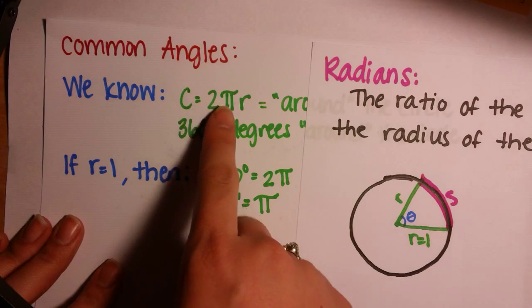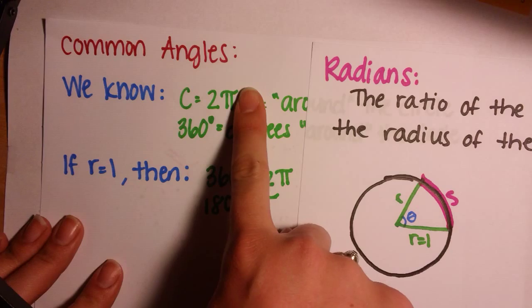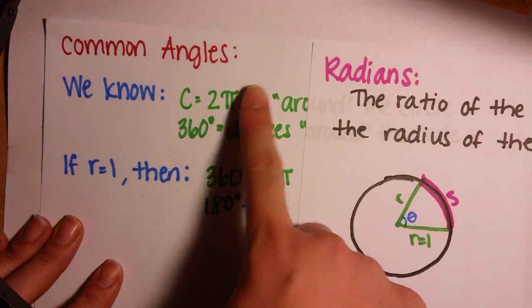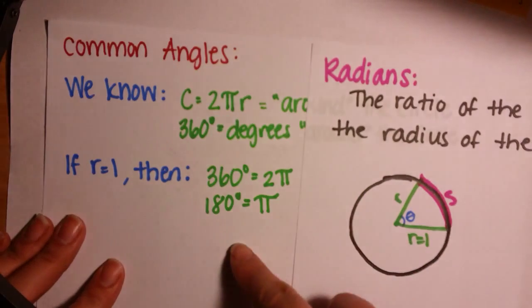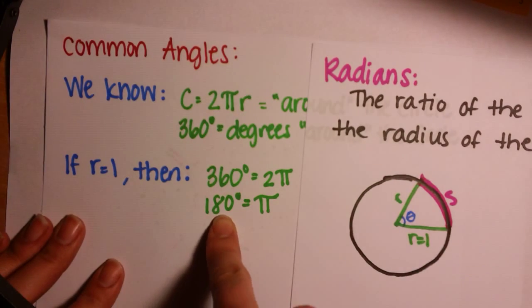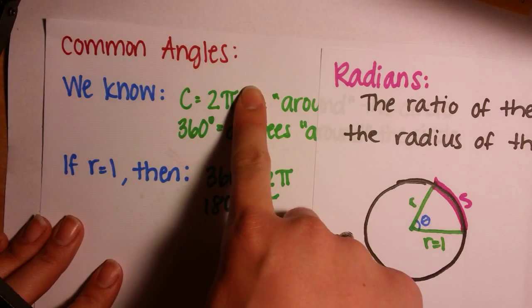That comes from the circumference. If r equals 1 here, then the circumference, or the arc length all the way around the circle, is 2π. If you want to talk about 180 degrees, that's going to be half the circumference, so it will be 2π divided by 2.